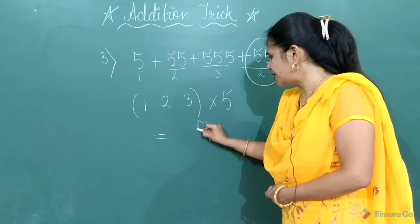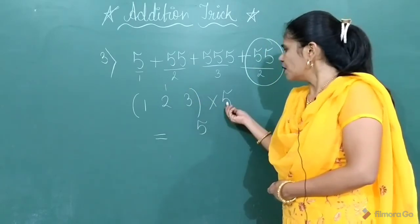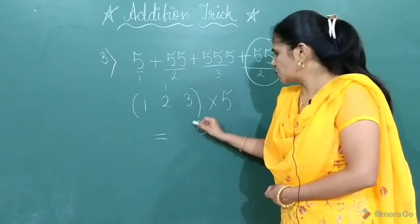5 threes are 15. 5, 1 will carry to the next group. 5 twos are 10 plus 1, 11.